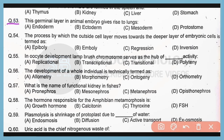Question number 53. Which germinal layer in animal embryo gives rise to lungs? So correct answer is option A. Endoderm gives rise to the lungs.